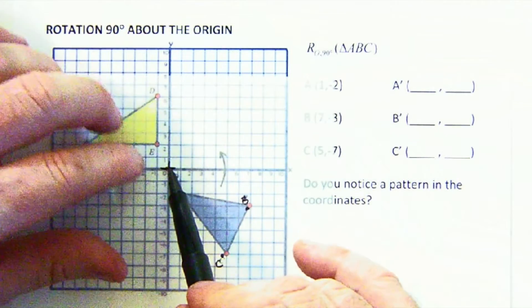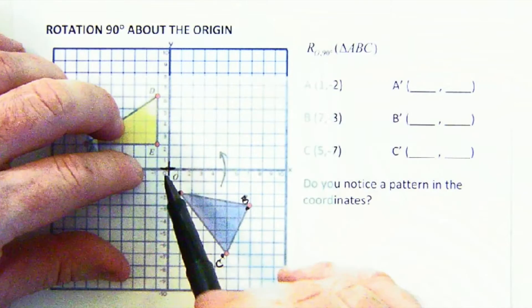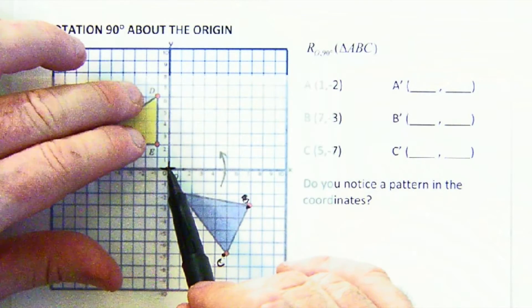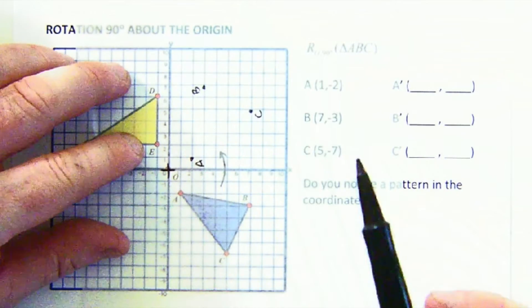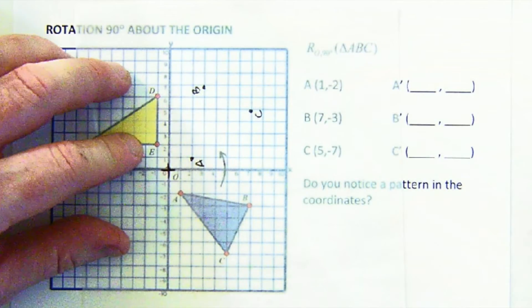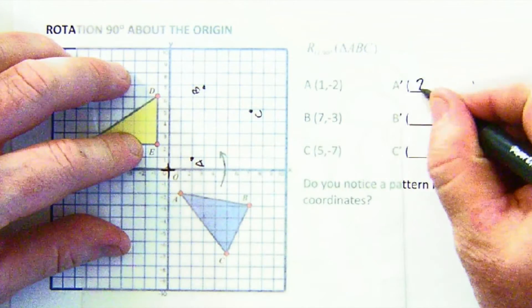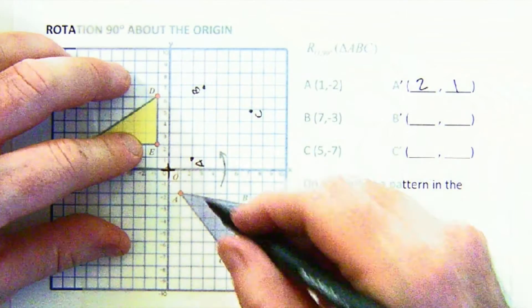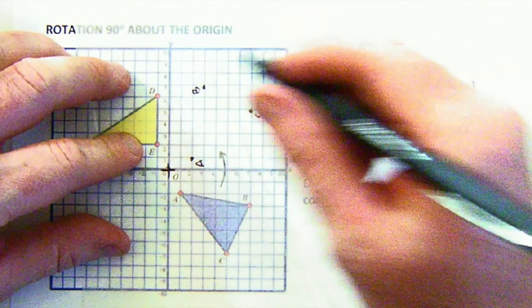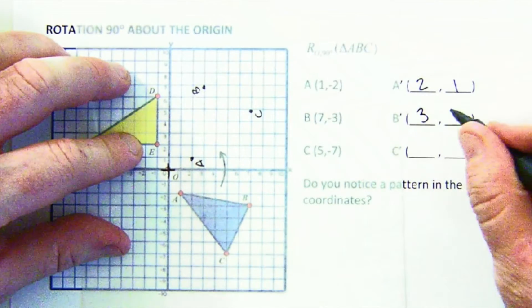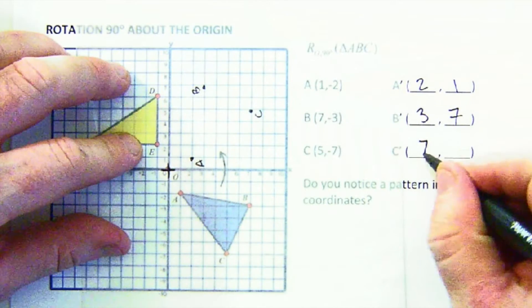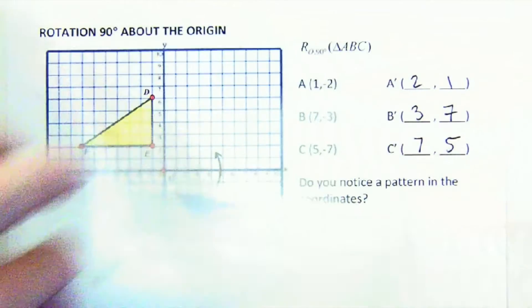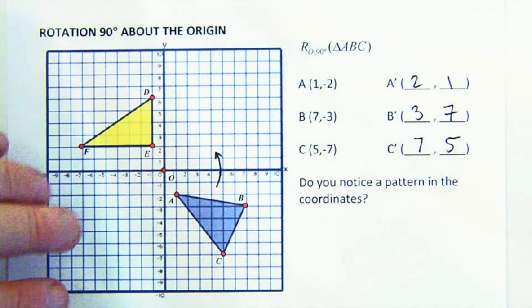Let's do a rotation. I've marked A, B, and C. I have a little plus symbol here at the origin where we're rotating about, 90 in a counterclockwise manner. A prime lands at (2, 1), B prime lands at (3, 7), and C prime lands at (7, 5), just like that.